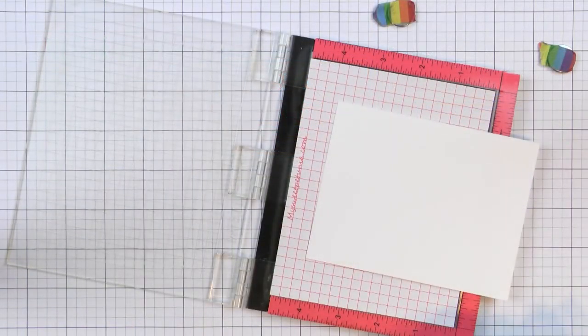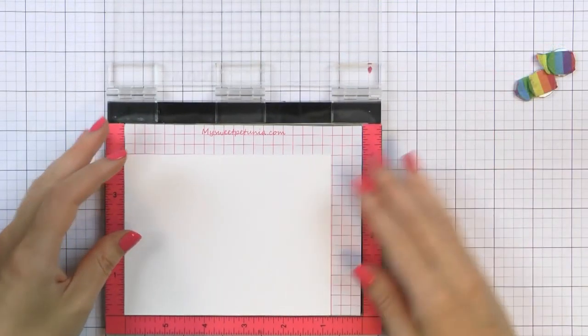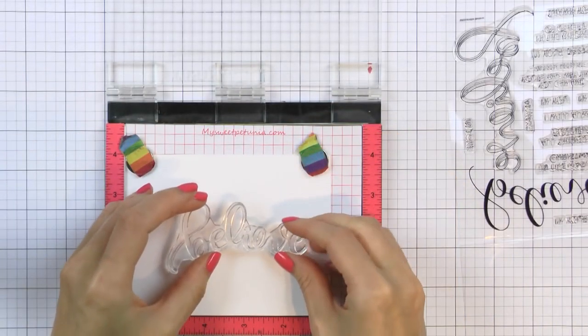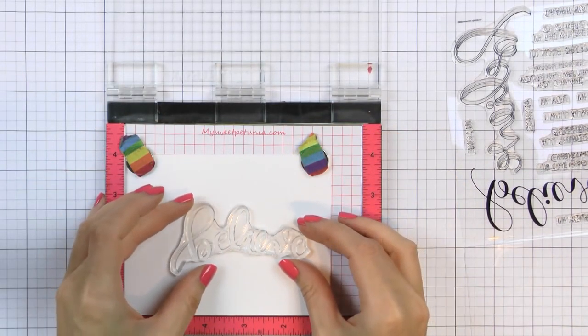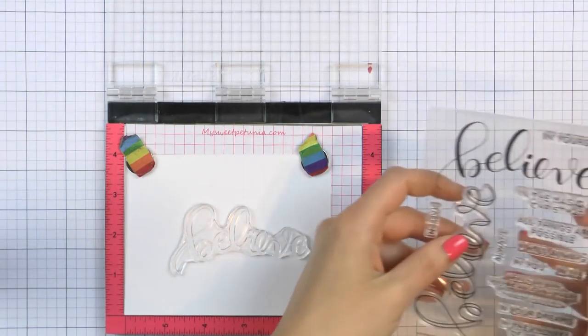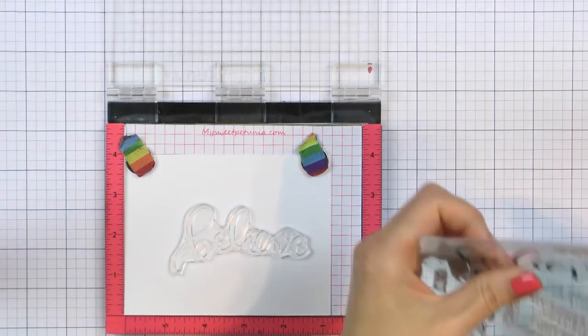I'm going to be using my MISTI stamp positioner today to do all of my stamping. I have several panels of white cardstock cut to 4 by 5.25 inches and I'm going to begin by stamping the large believe word and a smaller sentiment that reads "In the Magic of Christmas," positioning them in the middle of my panels.